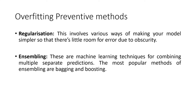The fourth preventive method is called ensembling. The name itself says it — ensemble means combining two or more methods. In this approach there are machine learning techniques for combining multiple separate predictions, where each model is used for different predictions and then all these models are combined. The most popular methods used for ensembling are bagging and boosting. Overall, these methods are trying to prevent overfitting in the model.